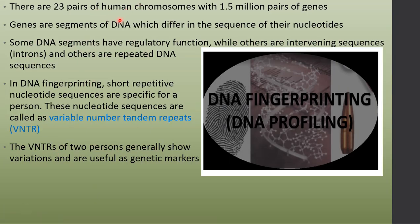Humans have 23 pairs of chromosomes and approximately 1.5 million pairs of genes, arranged in sequences that vary from person to person. Genes are segments of DNA that differ in the sequence of their nucleotides. DNA has non-coding intervening sequences called introns and some repetitive DNA sequences. These are the basis for VNTR in DNA fingerprinting — introns, repeated DNA sequences, and VNTRs.